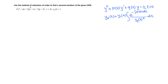We'll use the method of reduction of order to find a second solution of this ordinary differential equation. The first solution is given, and now we need to use reduction of order to find a second solution. Here is the formula — most of the work is done in deriving it. When we have y'' + py' + qy = 0, with t positive, and y1 is a first solution,